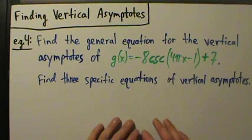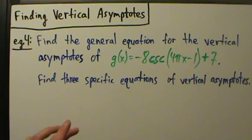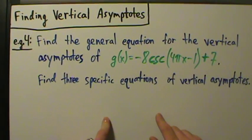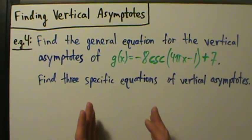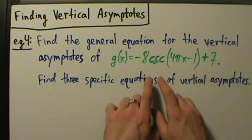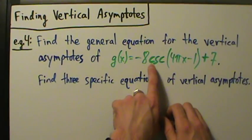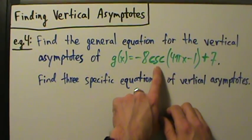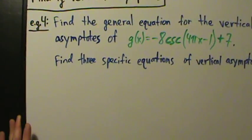Just like examples 1 and 3 had tangent and secant where nothing changes between them, similarly whether you have a cotangent or a cosecant nothing will change. If we changed this cosecant to cotangent, absolutely nothing in the problem would change - not one single thing.